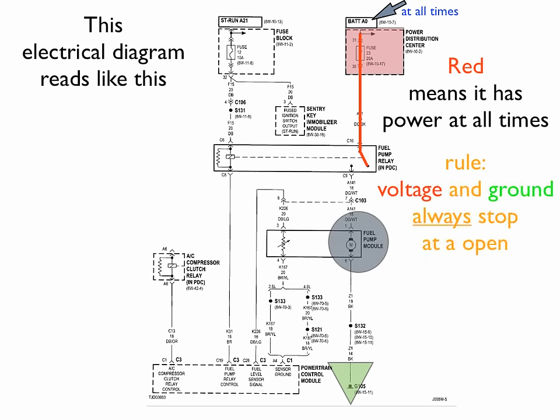because red means it has power at all times. Now this leads us to our first rule. Voltage and ground always stop at an open circuit. Now here this switch is open, so since it is an open circuit, that red or that power is going to stop right there.